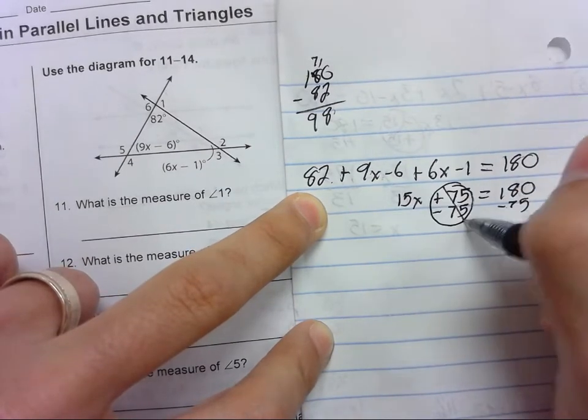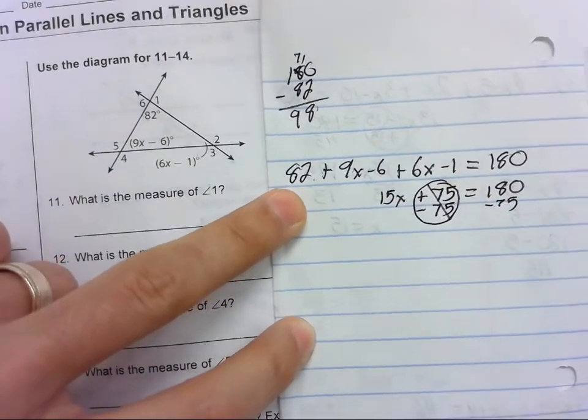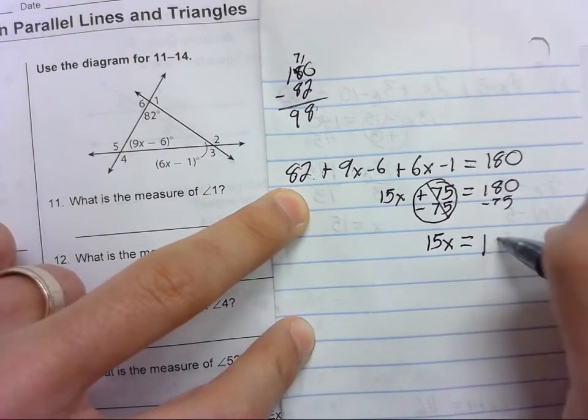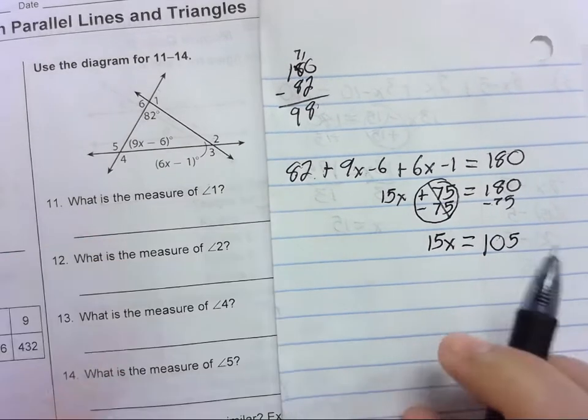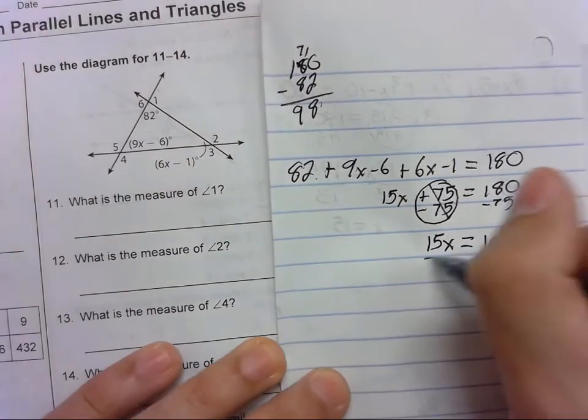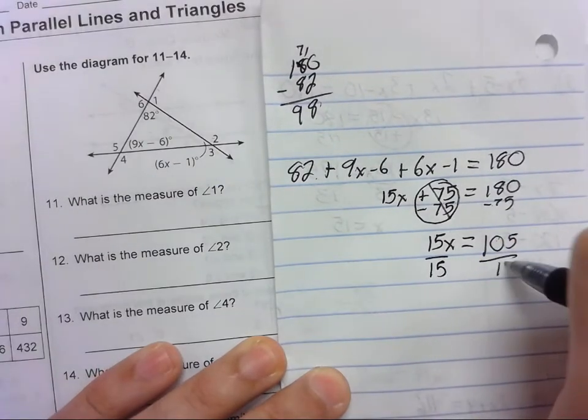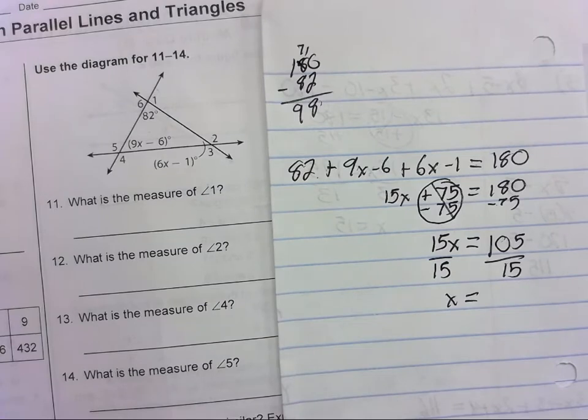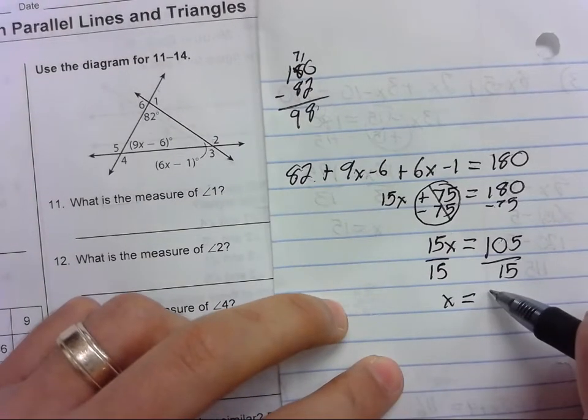Those create a 0 pair, and we're left with 15x equals 105. Now you will divide 15 on both sides. So 105 divided by 15 and x equals 7.